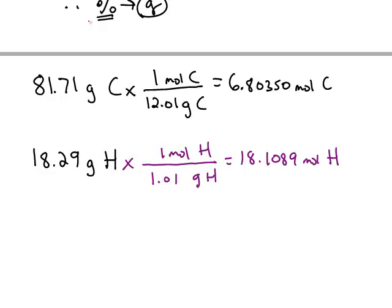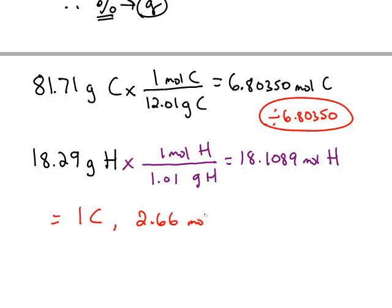But what we want is the smallest whole number ratio. So when you have a number such as 6.8 and 18.1, to find the smallest whole number ratio, what you want to do is divide by whatever number is the smallest. In this case, the moles of carbon are the smallest. So this is going to give us one mole of carbon and 2.66 moles of hydrogen.